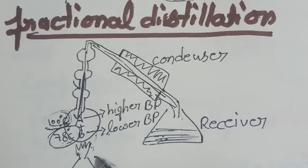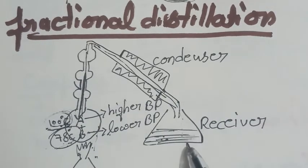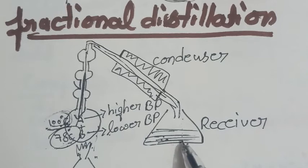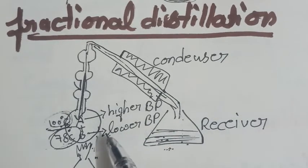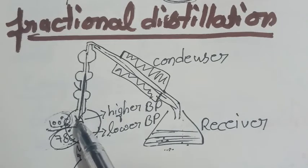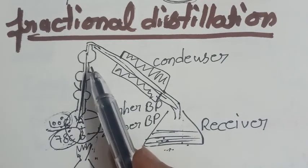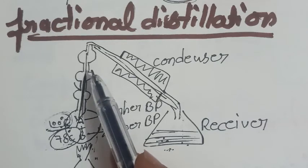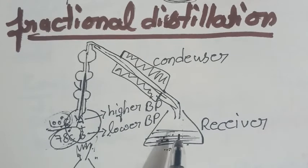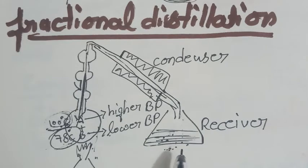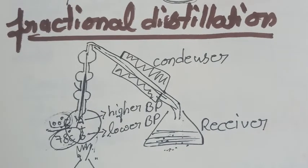the lower boiling point liquid gets into the condenser first and collected into the receiving flask. As long as the lower boiling point liquid continues to distill, the temperature remains constant. After the lower boiling point has distilled off, the higher boiling liquid begins to distill and the temperature rises. And again, the receiver is immediately changed and the higher boiling point liquid is collected separately. And the separately collected liquids are called fractions. And this is the whole process of fractional distillation.